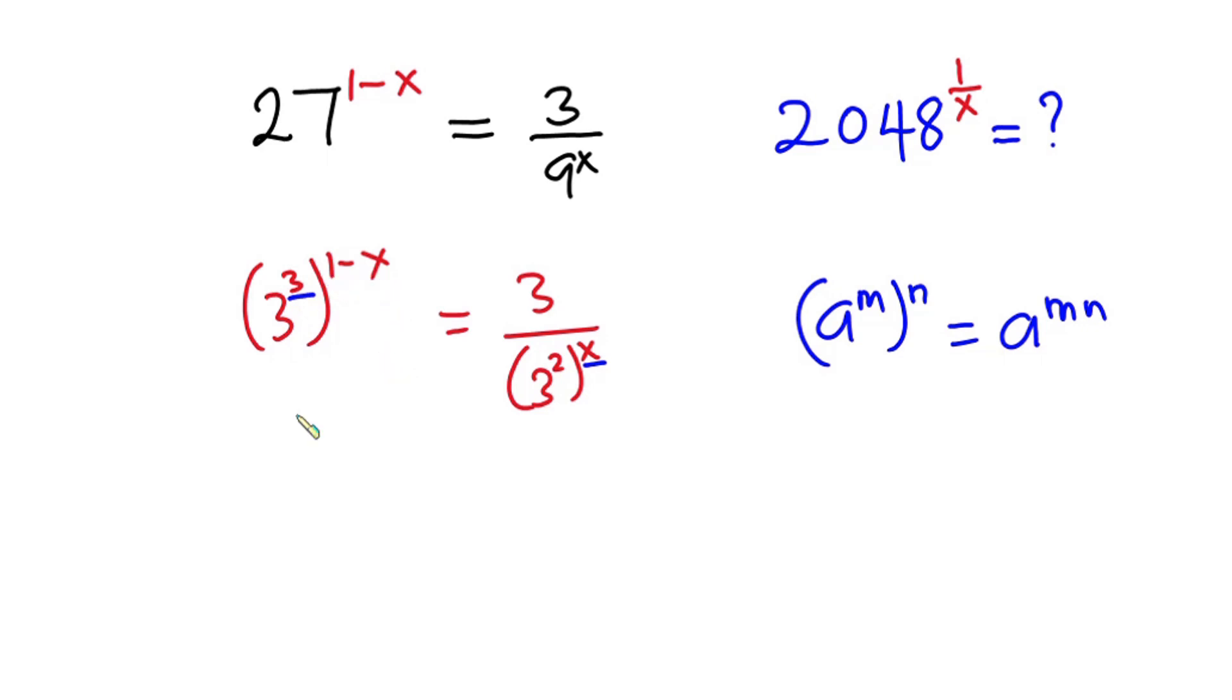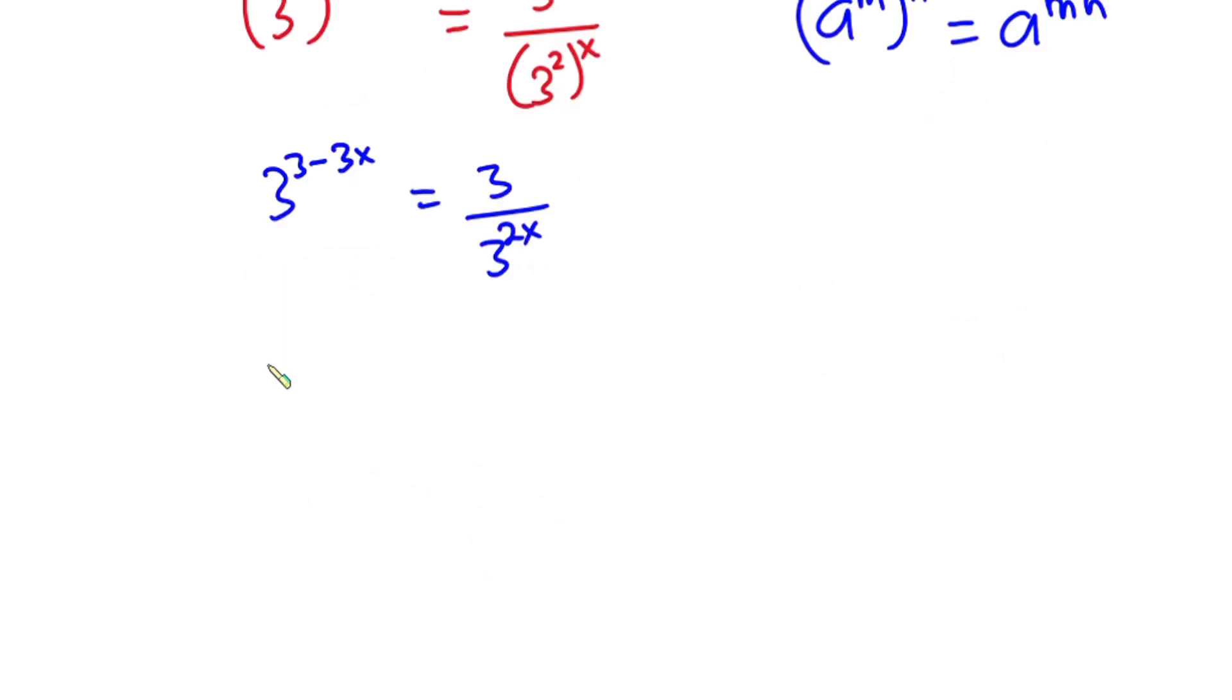So we have 3 to the power 3 minus 3x equals 3 over 3 to the power 2x. So we have 3 to the power 3 minus 3x equals, now this could also be written as 3 to the power 1 minus 2x.